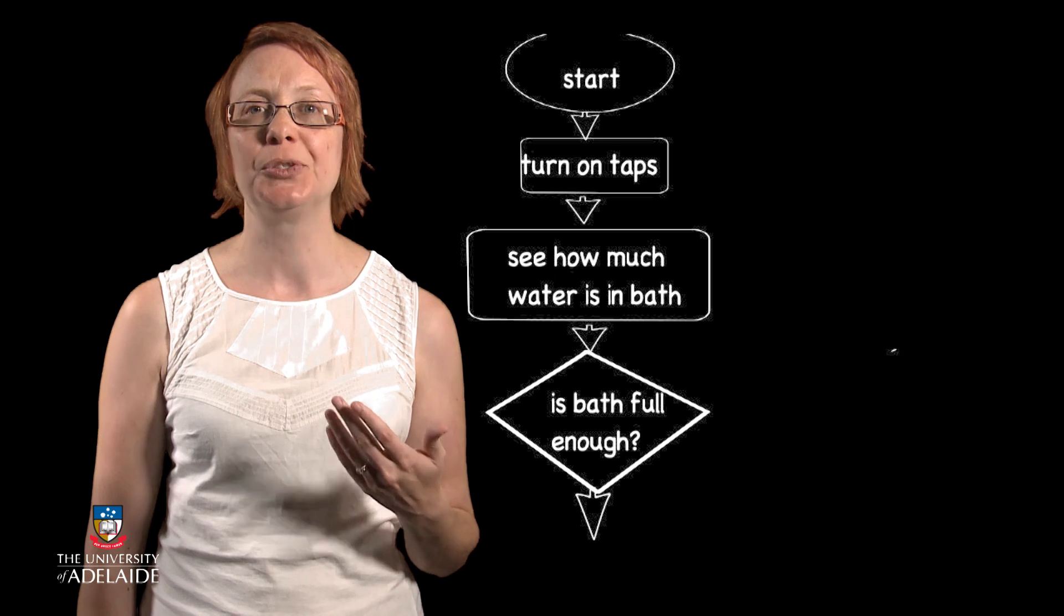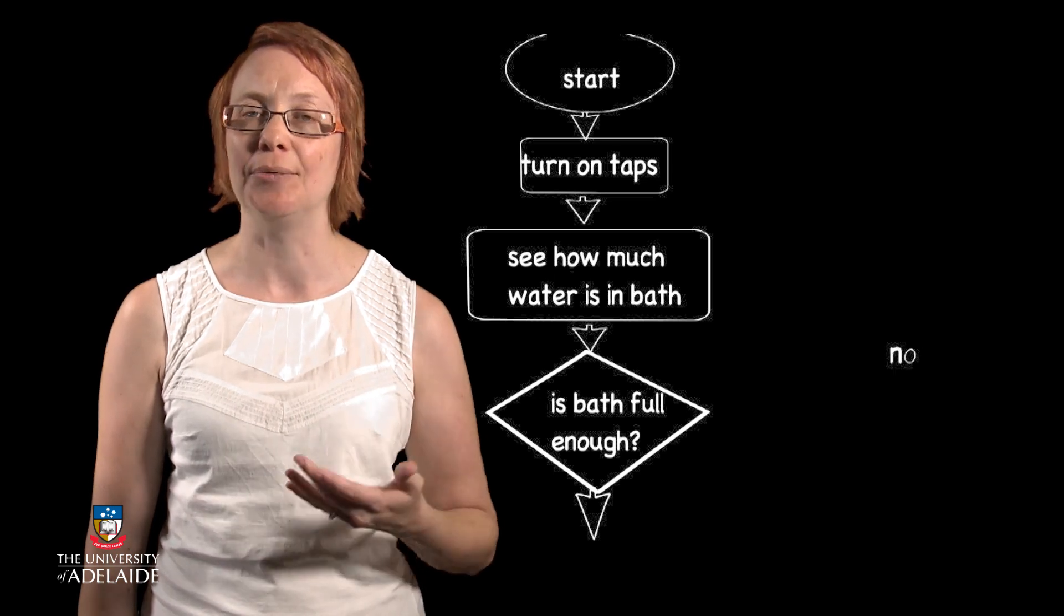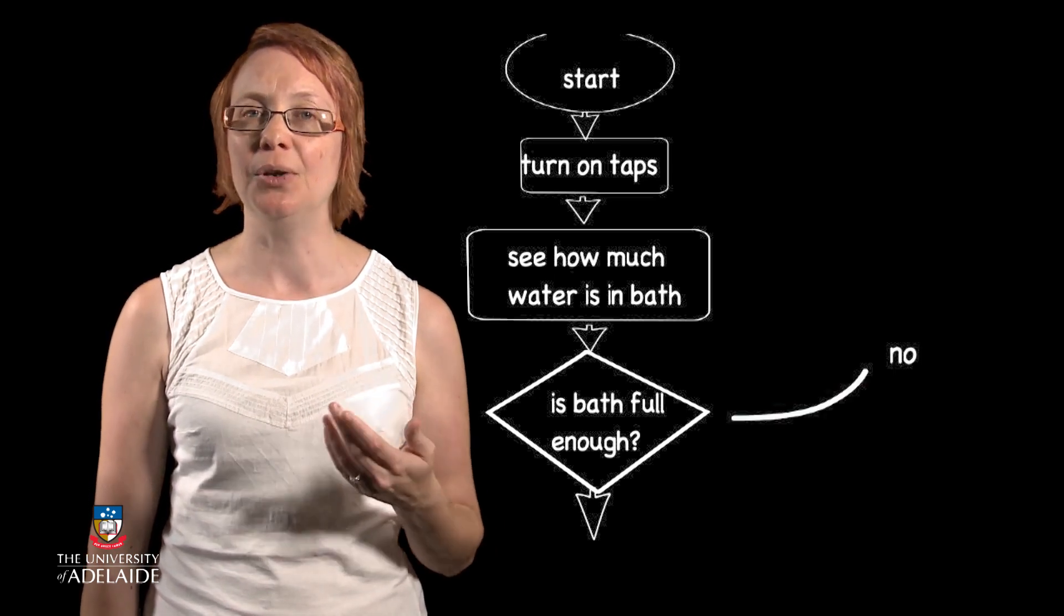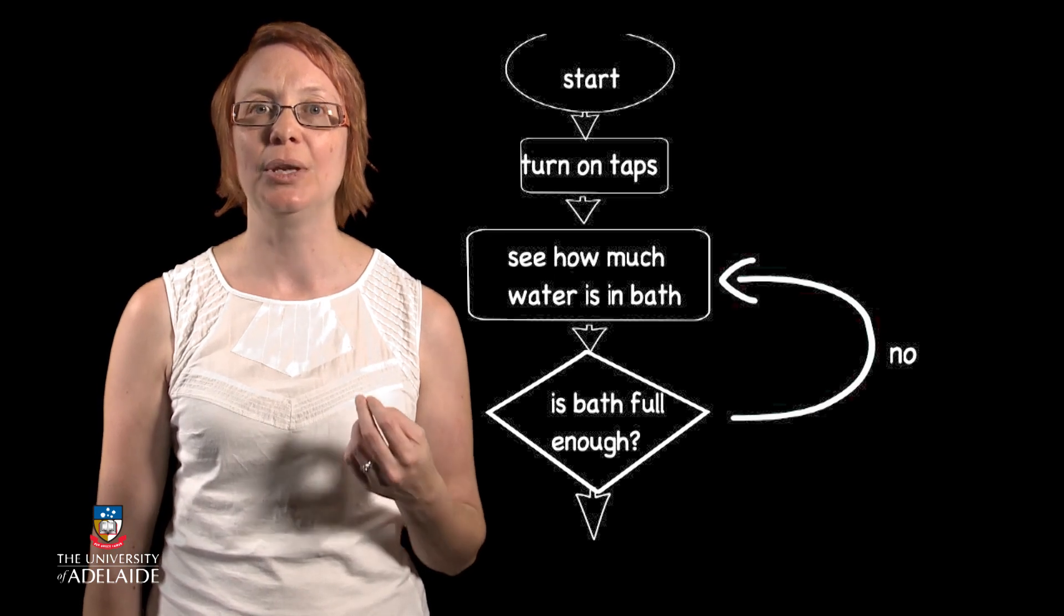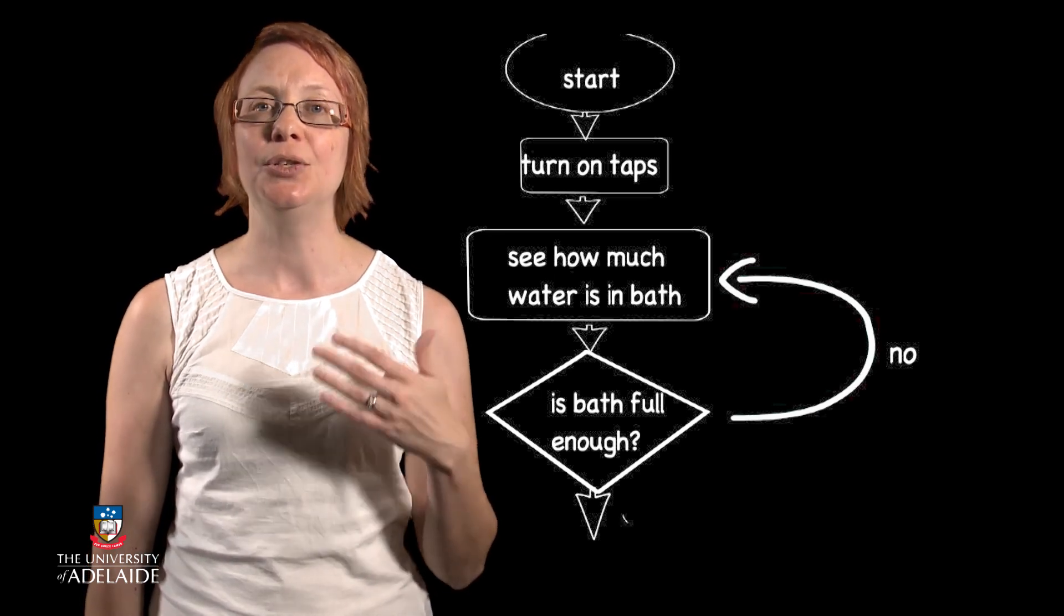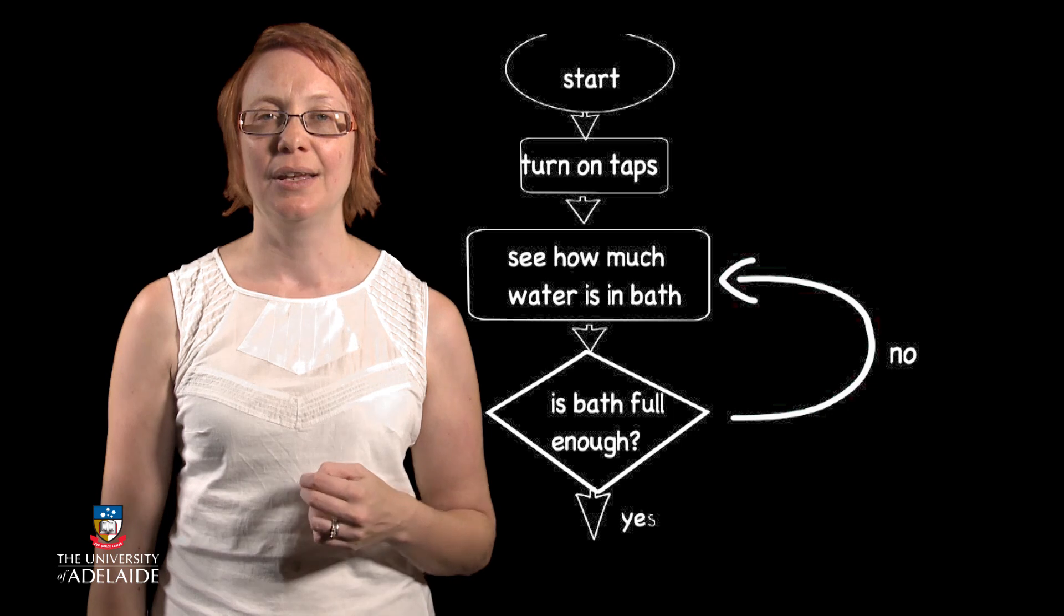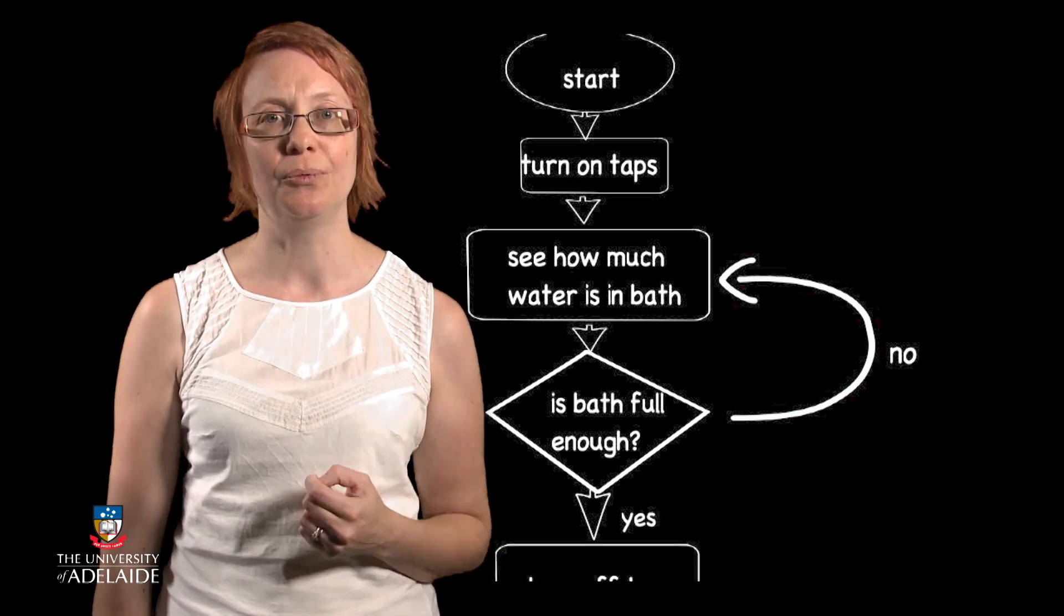The instruction we want to repeat is that of checking the water level in the bath. If it is not high enough for the bath, then we leave the water running and continue to check it. If it is high enough, we proceed to turn the tap off.